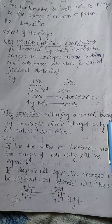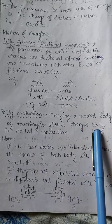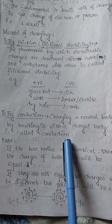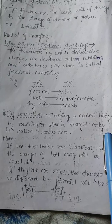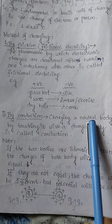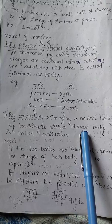Charging by conduction is very simple: charging a neutral body by touching it with a charged body. The neutral body is charged by contact with the same nature of charge as the charged body.